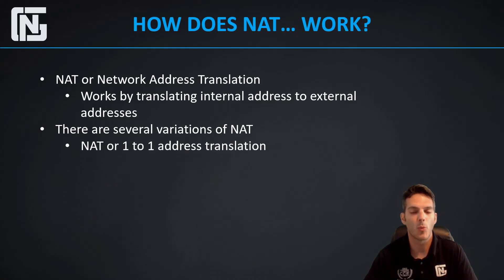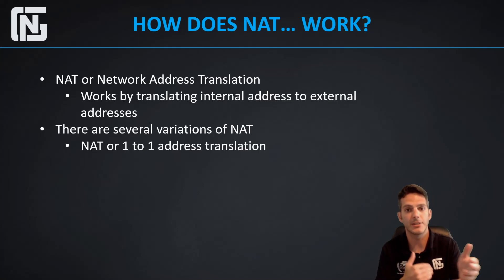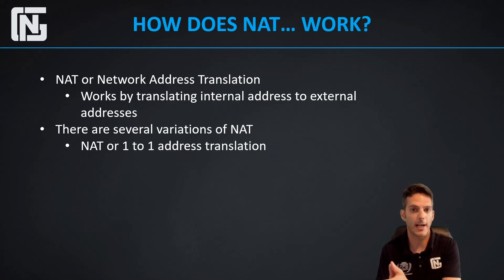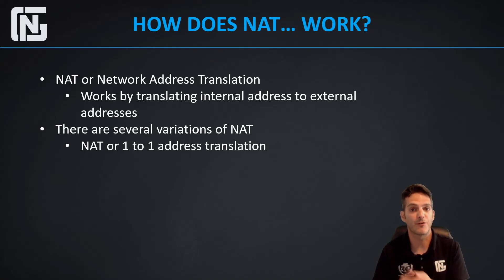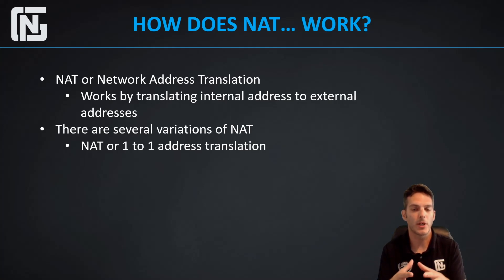The first type is NAT, or one-to-one address translation. This is literally translating one address into another — there is no translating multiple addresses on the back end to a single address on the outside. This is a one-to-one translation, typically dedicated to a server with a public IP. When a particular server or service needs to be accessed from the outside, this is typically done from the outside to a DMZ, so that you can segment the network where the server sits in a secured area but is still reachable from the outside.